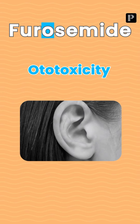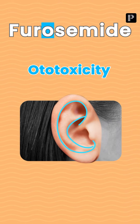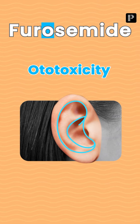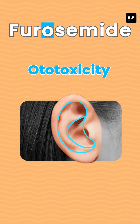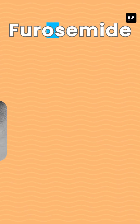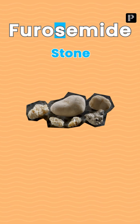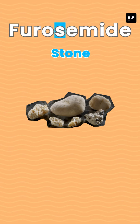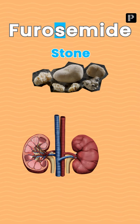O: these loop diuretics are going to cause ototoxicity. Remember the loops in the ear — so loop diuretics can cause ototoxicity.